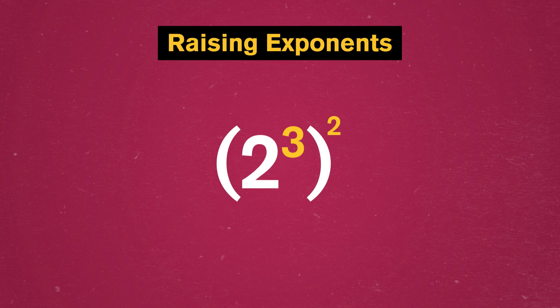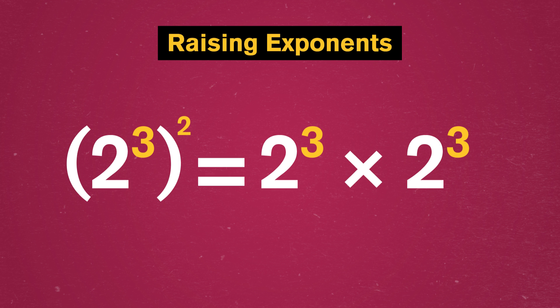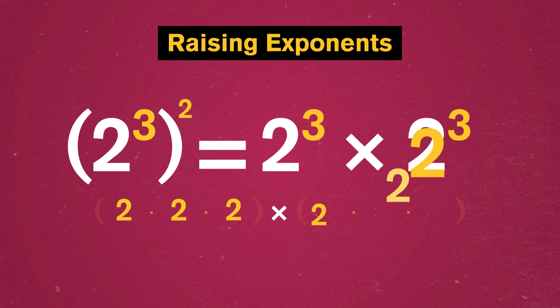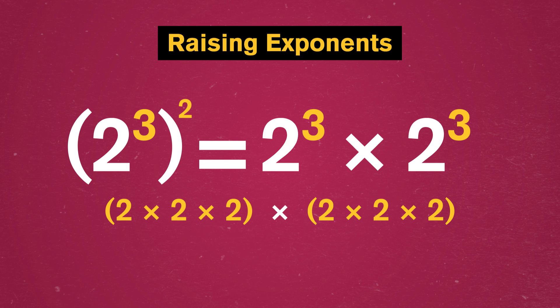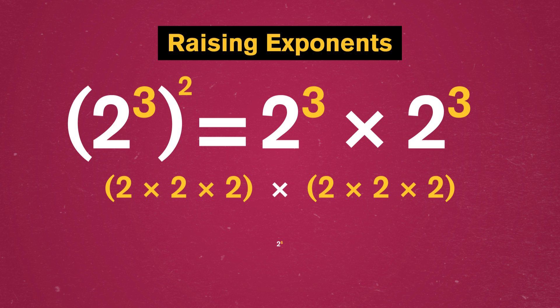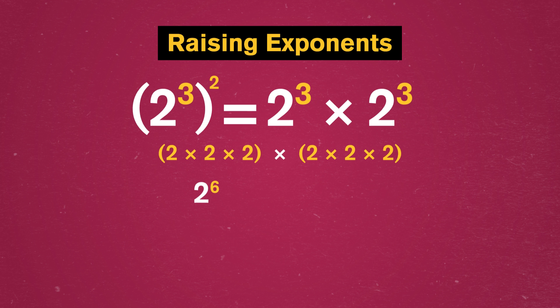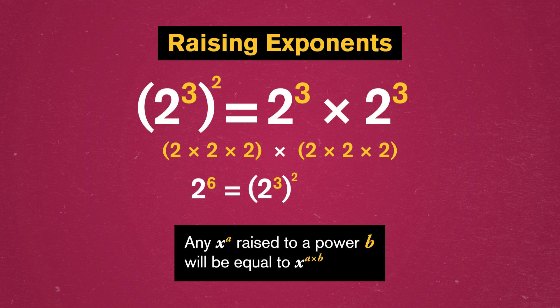Then we can amp up our multiplication even more and look at exponents raised to other exponents, like two cubed squared. Squaring is multiplying something by itself, so we're really looking at two cubed times two cubed. And we can write each of those two cubed as two times two times two. So we really have six twos — two to the sixth power. Any x to the a raised to the power of b will equal x to the a times b.